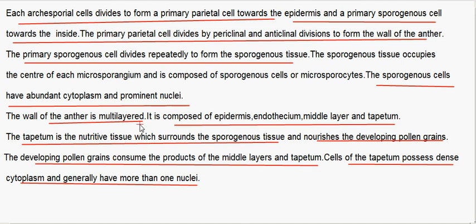The wall of the anther is multi-layered. It is composed of epidermis, endothecium, middle layer and tapetum. The tapetum is the nutritive tissue which envelops the sporogenous tissue and nourishes the developing pollen grains. The developing pollen grains consume the products of the middle layers and tapetum. Cells of the tapetum possess dense cytoplasm and generally have more than one nucleus.